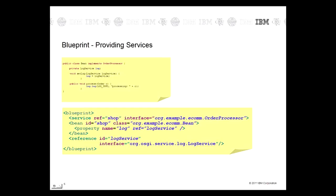It's also similarly easy to expose something inside the service registry. In this case I've taken the bean, made it implement an order processor, and then added a little bit of XML which says: put the shop bean into the service registry using the interface order processor — and that is all there is to it. Blueprint will manage all the dynamism for you: when the reference is not available the service won't be registered; once the log service becomes available, it will instantiate the bean and register it in the service registry.